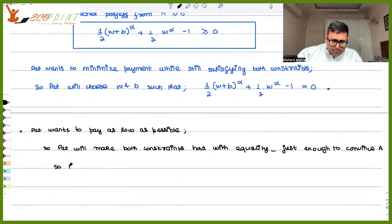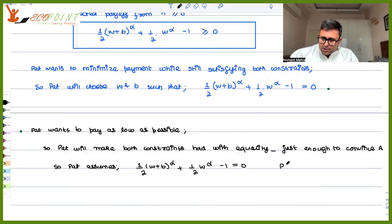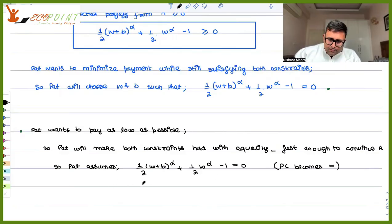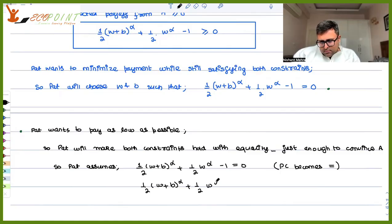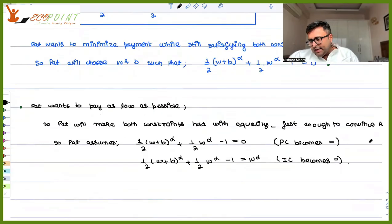Pat assumes this is your participation constraint — you will have to go back to the earlier recording to see how we got this. The participation constraint now holds with equality. And this is your incentive compatibility constraint, which also becomes equal now. You can call them PC-dash and IC-dash respectively.